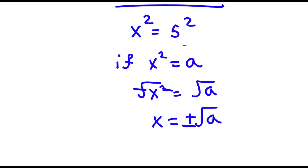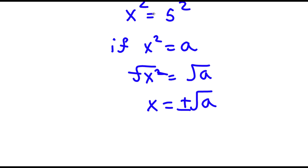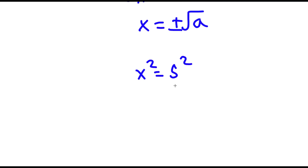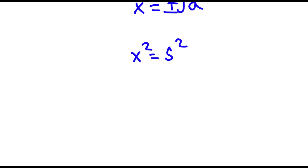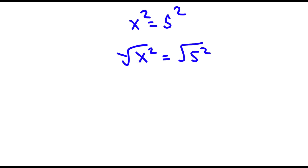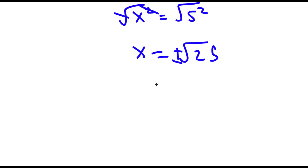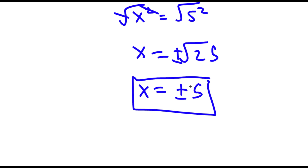So now for x squared equals 5 squared, to solve this I'm going to be taking the square root on both sides. So now I have the square root of x squared is equal to the square root of 5 squared. These two cancel out, and I'm left with x is equal to the square root of 25, and this is actually positive or negative. The square root of 25 is 5, so I have x is equal to positive or negative 5. So this is my answer.